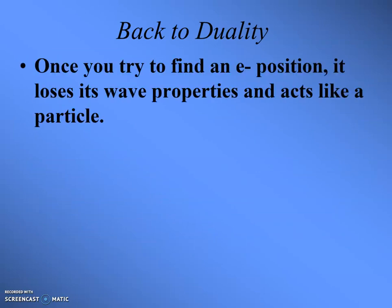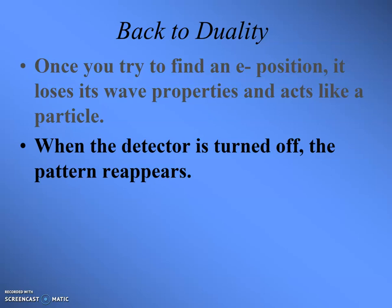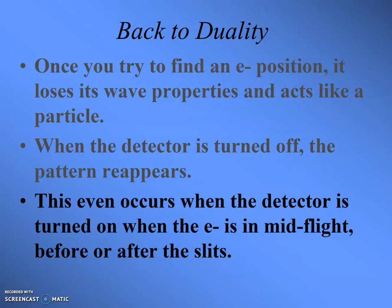So going back to duality: once you try to find an electron's position, it loses its wave properties and acts like a particle — that's why you get two blobs. When the detector is turned off, the pattern will reappear, so you can go back and forth. This even occurs when the detector is turned on while the electron is in mid-flight. Even if you put on the detector after the electrons have gone through the two slits in the Young's experiment, if you turn the detector on at any point, the electrons will act like a particle and make two blobs. It doesn't matter when you put on the detector — you put on a detector, you get two blobs instead of an interference pattern.